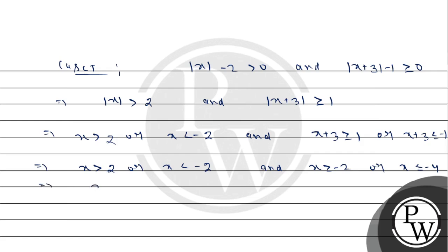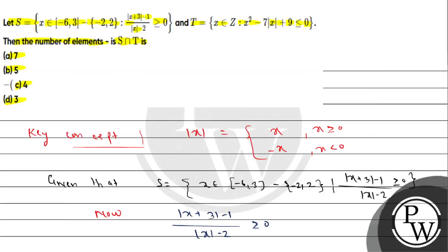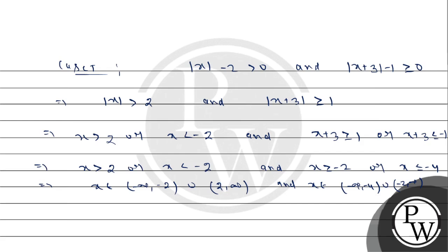Combining these conditions in Case 1: from mod x greater than 2, we get x belongs to minus infinity to minus 2 union 2 to infinity. And from mod x plus 3 greater than or equal to 1, we get x belongs to minus infinity to minus 4 union minus 2 to infinity. Taking the intersection of these two conditions within our domain.